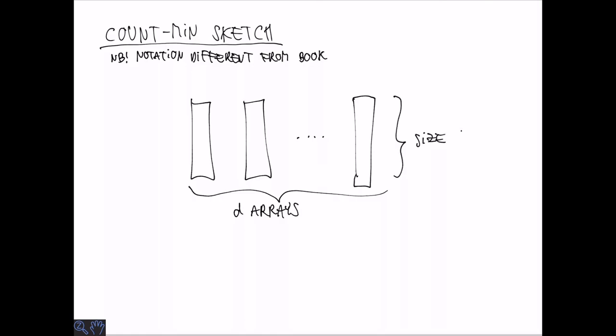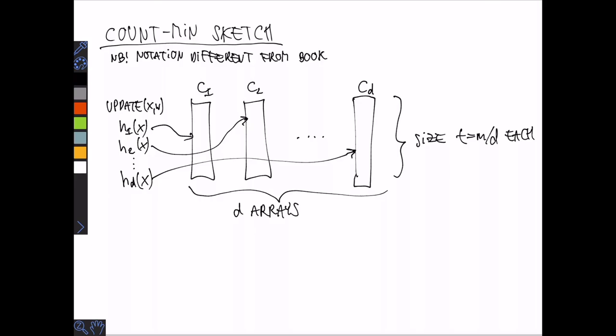So the data structure looks very much like a split bloom filter. We have d arrays of some size t each. Let's call them C1 through Cd. An update with X, W evaluates d hash functions indexing each of the d arrays. And the update simply takes each of these array entries and adds the weight W to each of them. So that is for i equals 1, 2, 3 up to d we increase C_i of h_i of X by W.